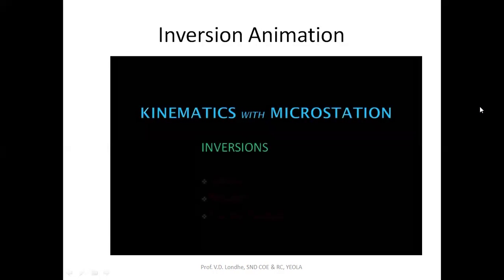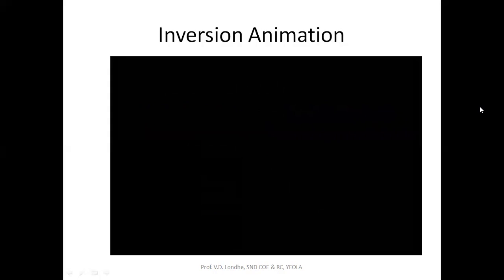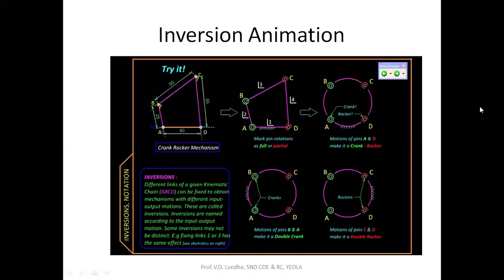Now we will see the inversion of the four-bar chain mechanism. Often the purpose of a mechanism is to transfer or transform a given input motion into a desired output motion. If we start with a four-bar linkage with given link lengths, we can potentially fix any of the four links to derive four different four-bar mechanisms. This process is called inversion — essentially a shift of observer from one link to another, so a different link appears fixed and a different input-output relationship is observed.